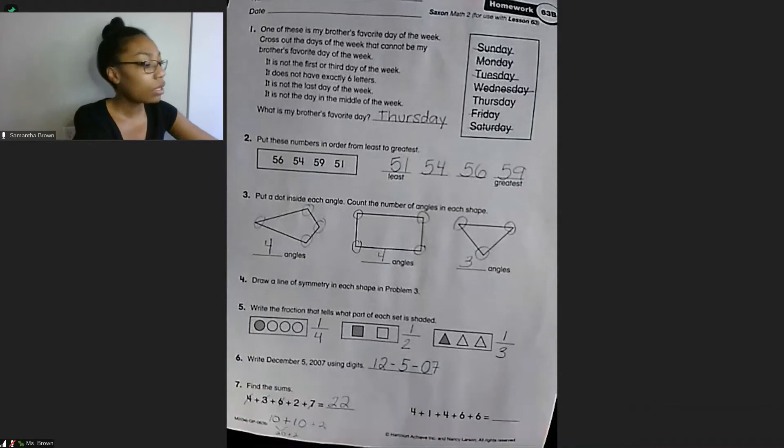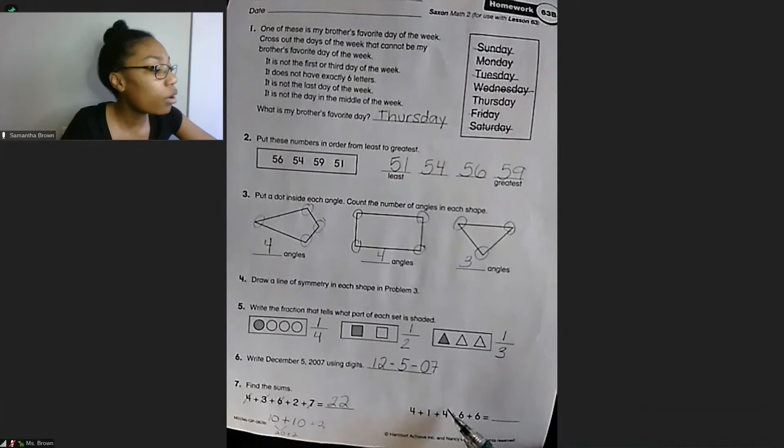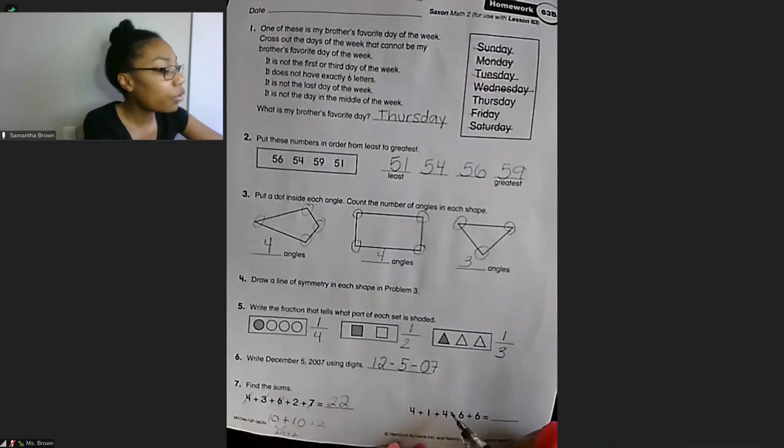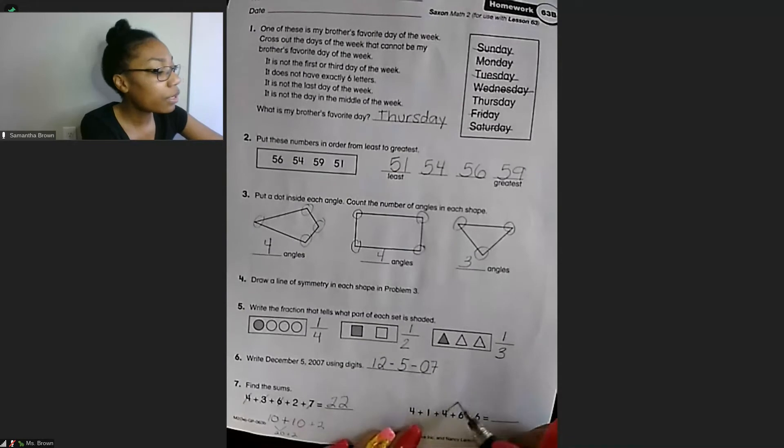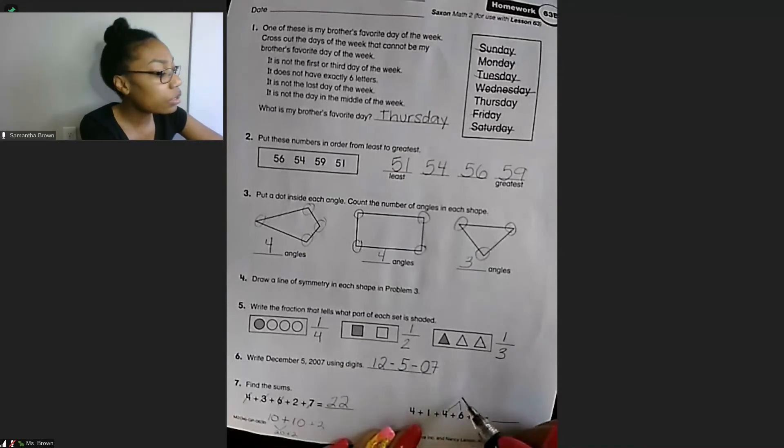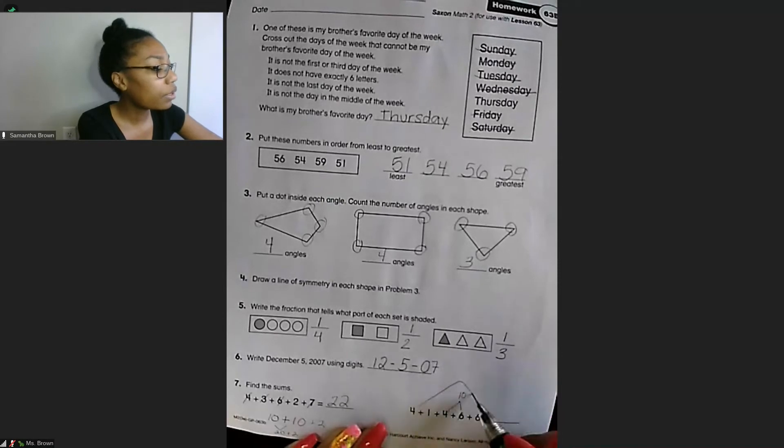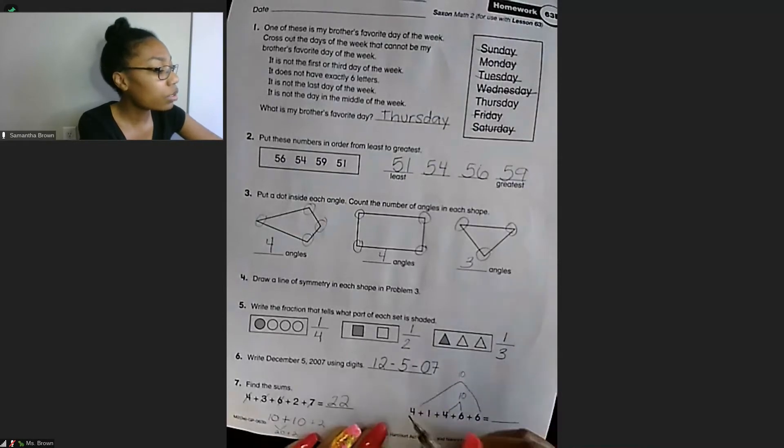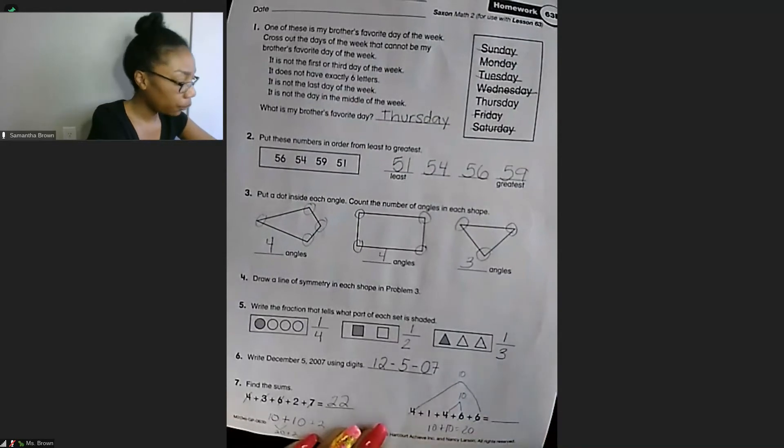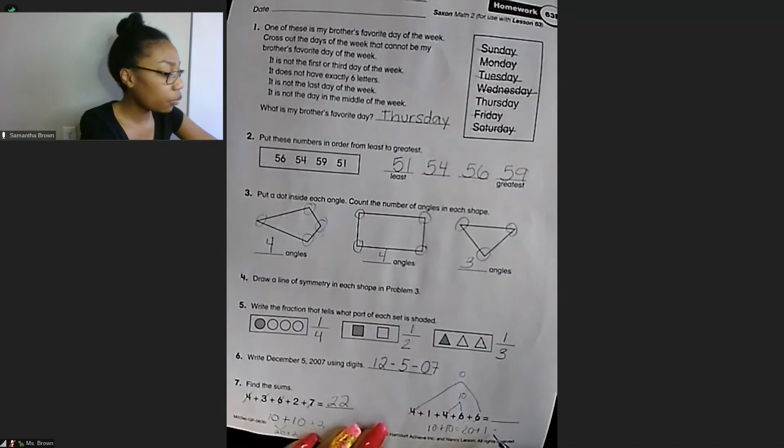Next one, we have 4 plus 1 plus 4 plus 6 plus 6. So already right here, 4 plus 6 equals 10. And we have another 4 plus 6 equals 10. Cross those off. 10 plus 10, we just said, equals 20. And we have one left. So 20 plus 1 equals 21.